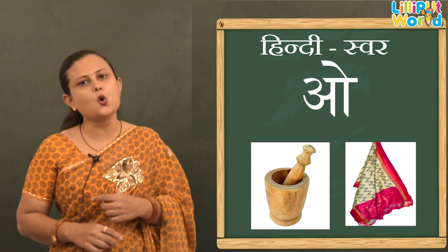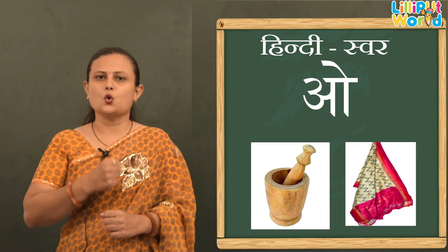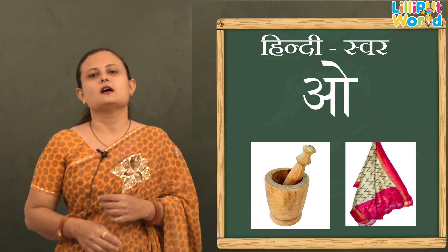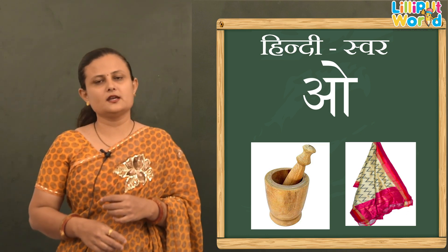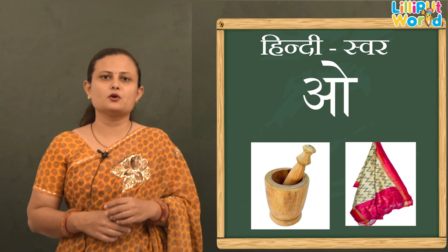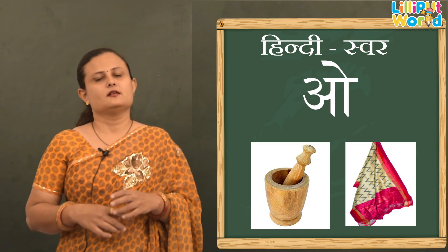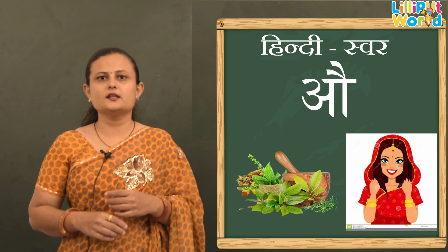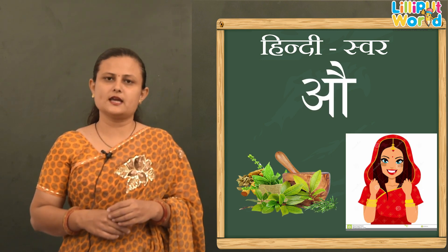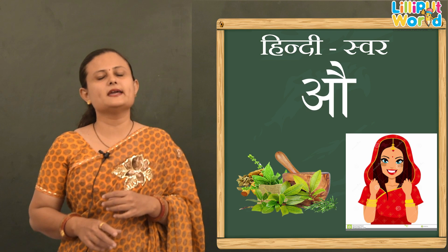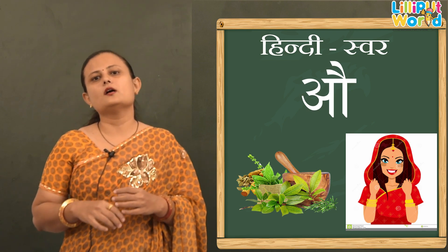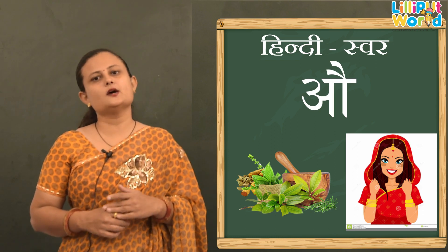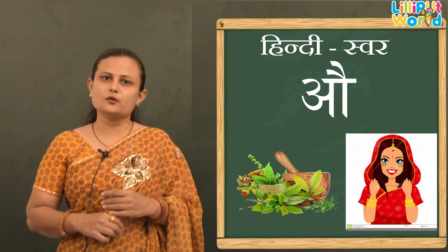Now next ओ — O se Okhli, O se Odani. Odani means — aapki mummy dupatta pehenti hai na dress ke upar, use kya bolte hain? Odani! Now औ — Au se Aurat, Au se Ausad. Ausad means medicine. Aur Aurat kisko bolte hain? Kisi bhi lady ko — use Aurat bolte hain.